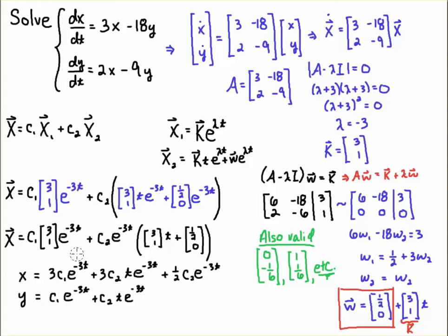Sometimes they will want you to write this out in component form, where remember that the vector capital X had components x, y. So if I distribute the c1 into here, I get 3c1 e to the minus 3t plus c2 — and that's a 3 here — so I get 3c2 times t e to the minus 3t plus (1/2)c2 e to the minus 3t. I just used the distributive property for this top row and added the components together. And then the bottom row, I get y equals c1 e to the minus 3t plus c2 e to the minus 3t times 1 with a t, and then there's 0 here so there's no term. So here are a couple different forms of the solution — there are many forms, here are two possible ones. If you had a different generalized eigenvector, you would get a slightly different solution because this vector would be different. This vector would be the same, (3,1), but this vector would be different.